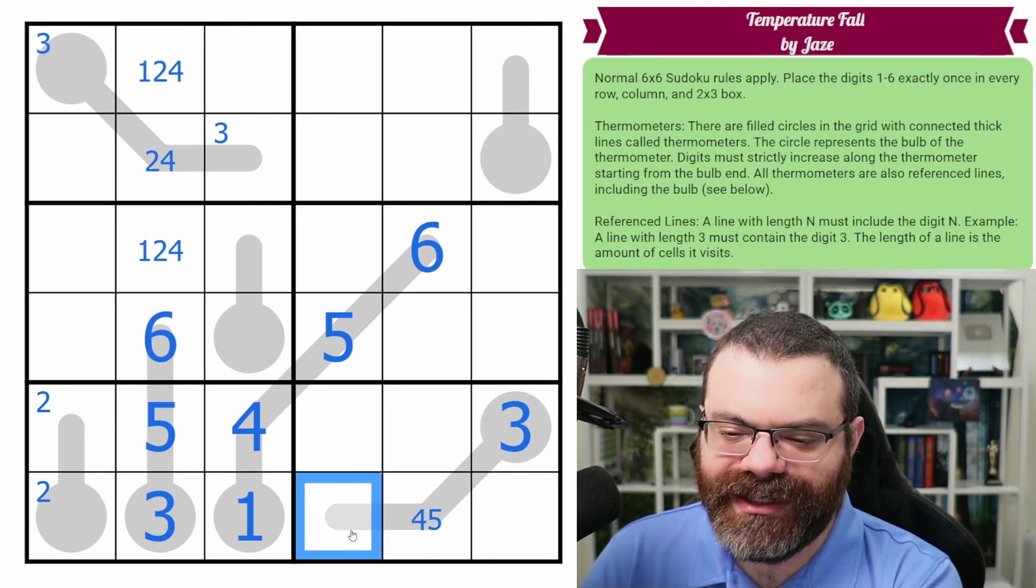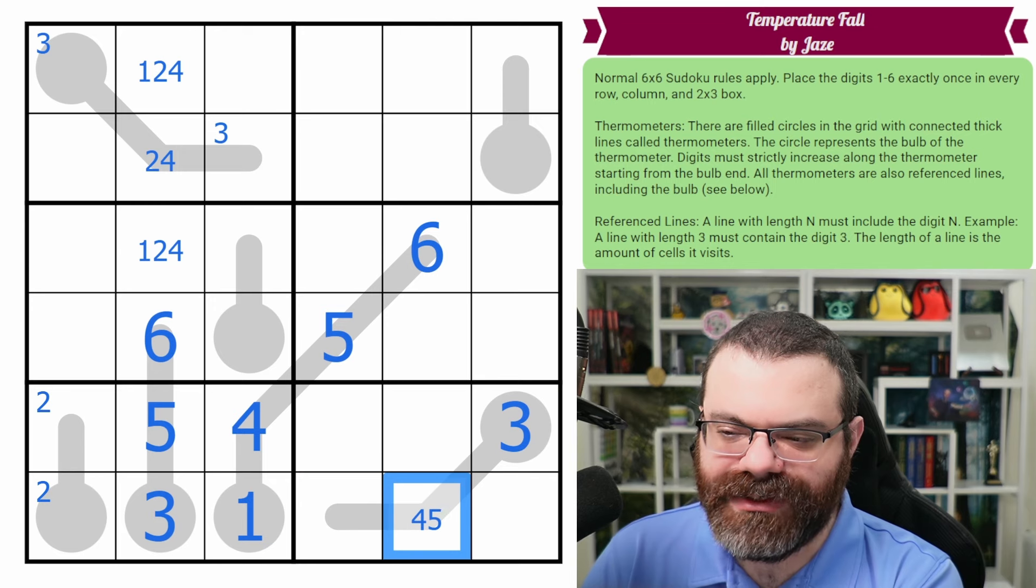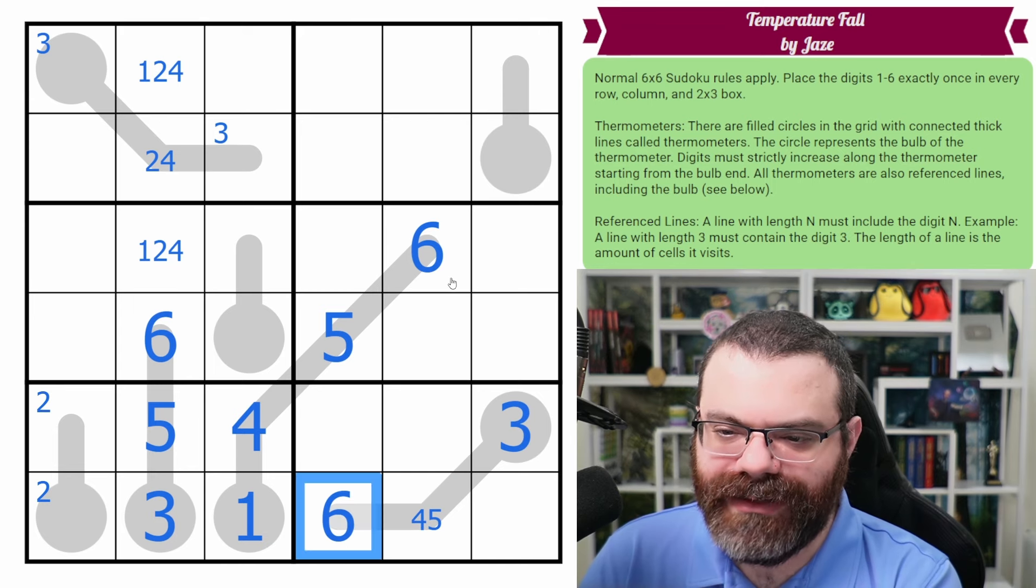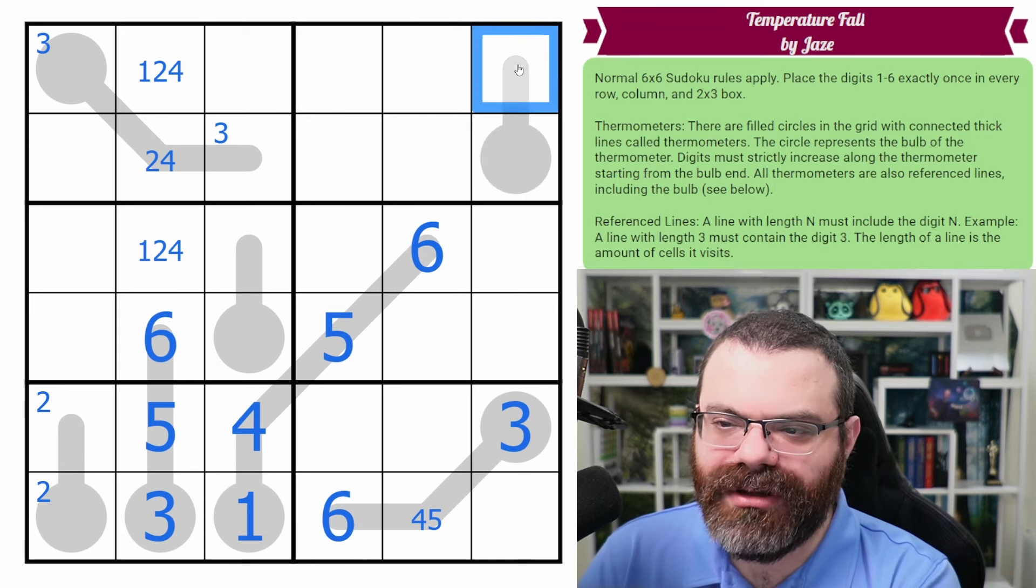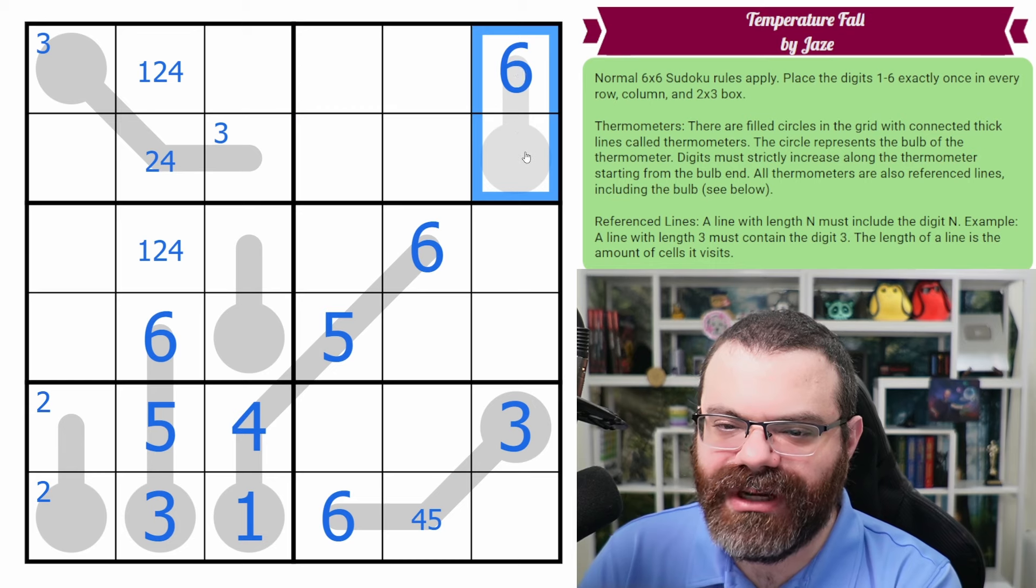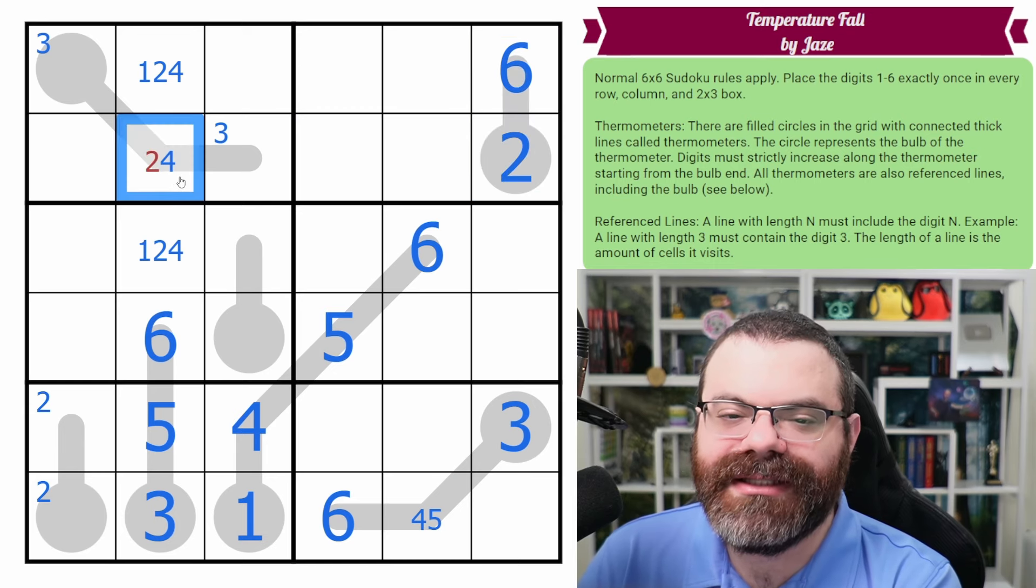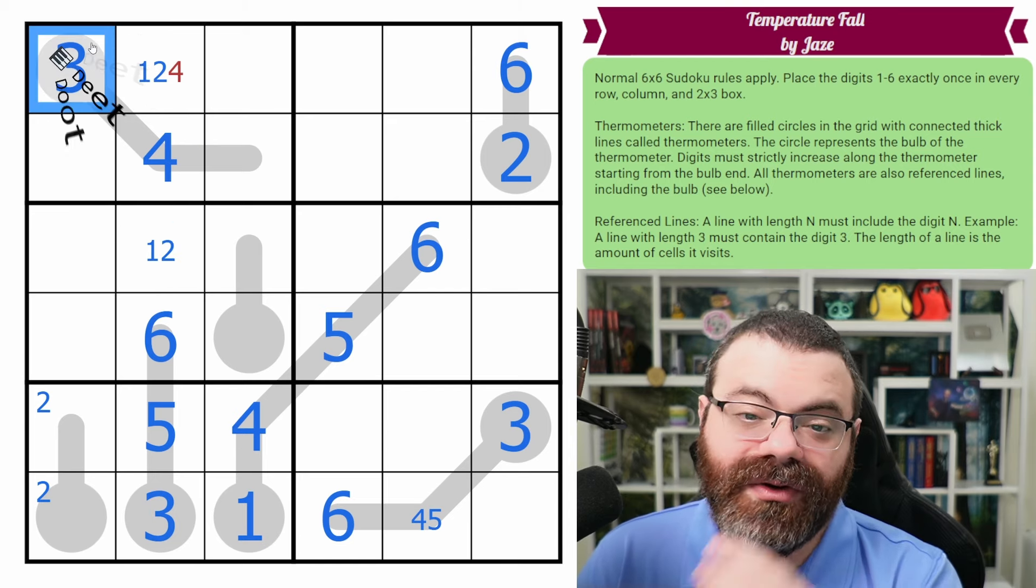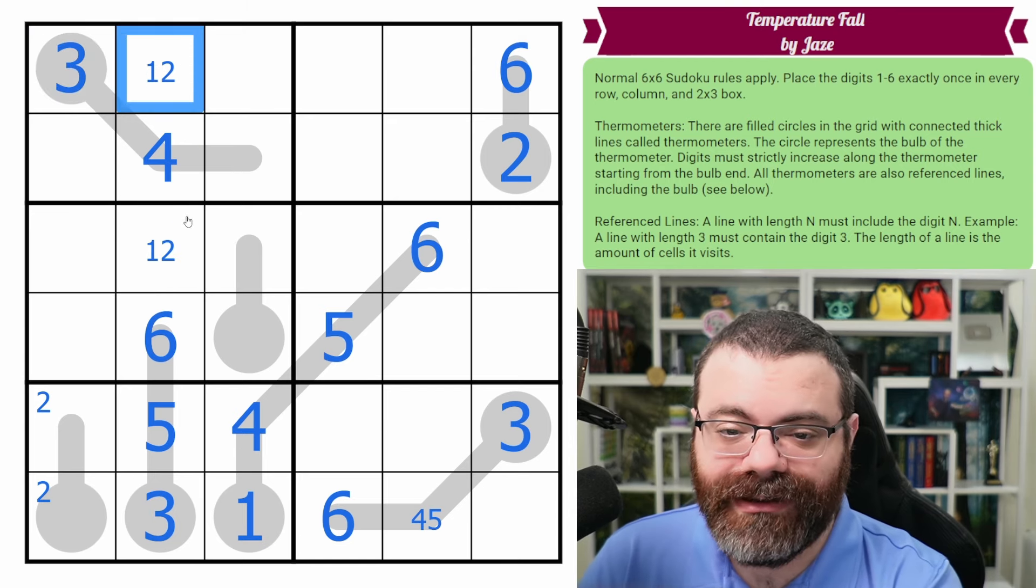This actually has to be six because even if this was a four, the smallest it could be, this has to be five or six, but it can't be a five. So this is a six, no matter what. These sixes look up, can't put six in a bulb. So six ends up here. This needs a two on it though. So the two goes there. That makes this four, and that makes this three. Okay. These aren't four. We get a three in the corner, right there.